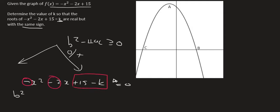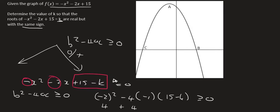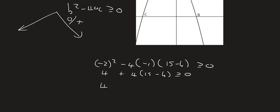Now we want to make b squared minus 4ac bigger than or equal to 0. So we're going to take b squared which is negative 2 squared minus 4 times a which is minus 1 times c which is 15 minus k, and we want that to be bigger than or equal to 0. Then we're going to simplify so that becomes 4 plus 4 times 15 minus k bigger than or equal to 0. We can then multiply the 4 in and that's going to give us 60 minus 4k bigger than or equal to 0. I'm going to take the 4k over to the right hand side and that's going to give us 64.